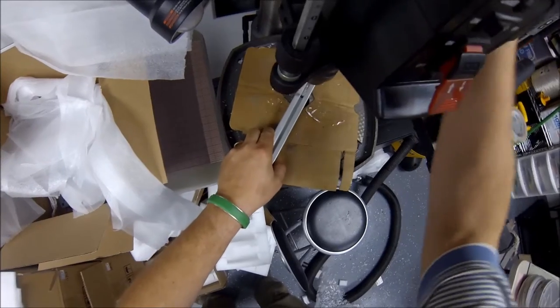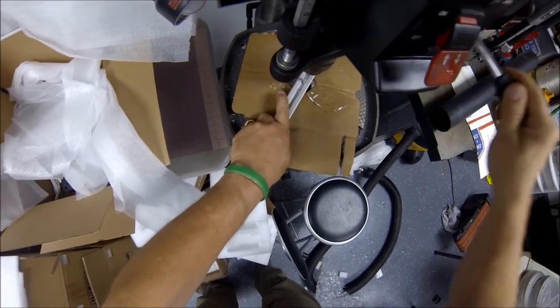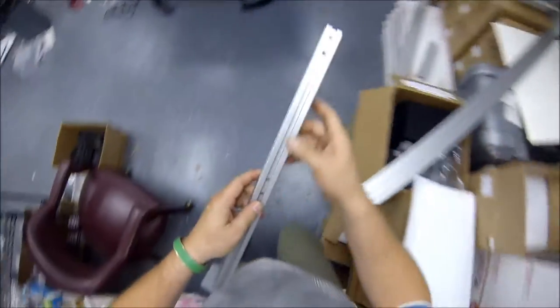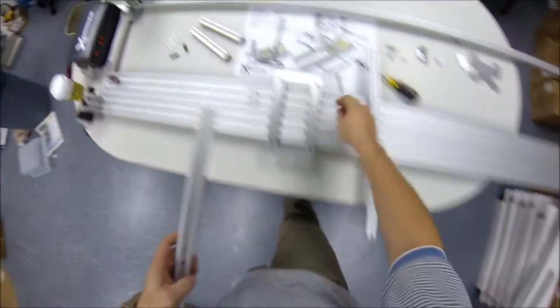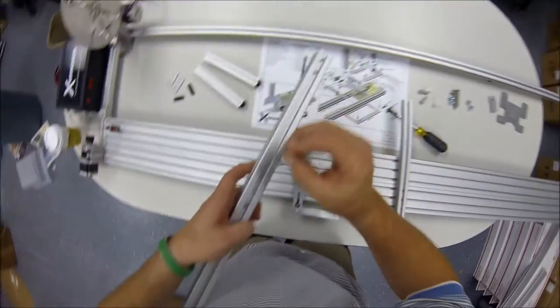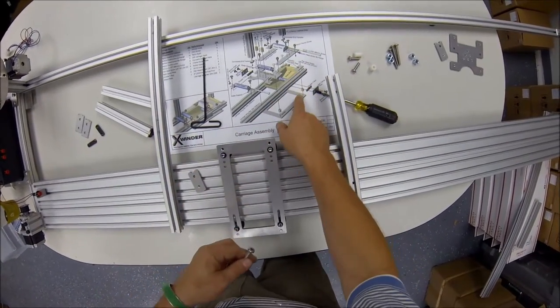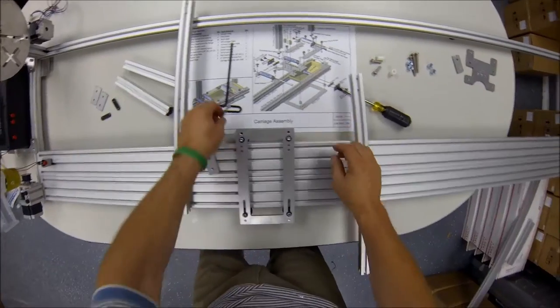And I'm going to do that for both carriage wing bars. Notice now that that will now accept the quarter-twenty two inch bolt, so we can secure the wing bar down to the wheel plate.